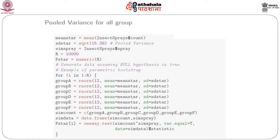To do that, we start with the quantity 'mean_star', which is the mean of all InsectSprays counts ignoring the spray groups. The standard deviation is the square root of 15.38. For each of the 6 groups A to F, we take a random sample of size 12 from a normal distribution with mean equal to 'mean_star' and standard deviation equal to 'sd_star' (square root of 15.38). We do this 10,000 times.